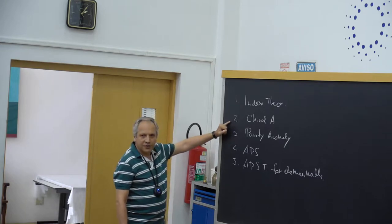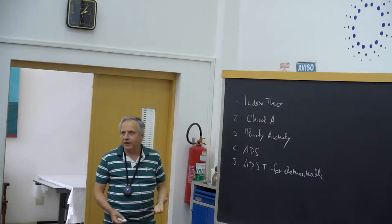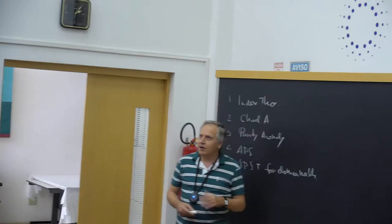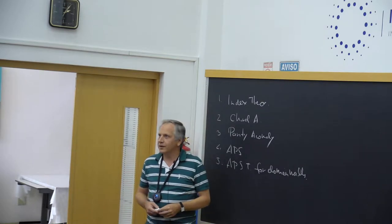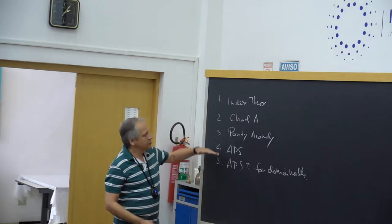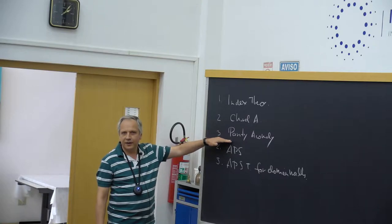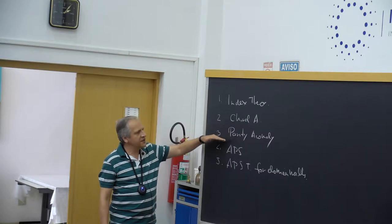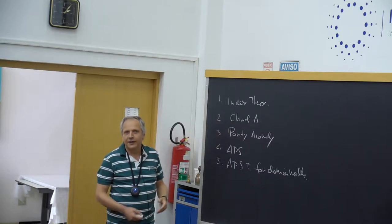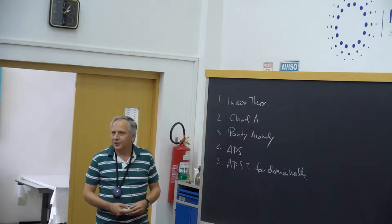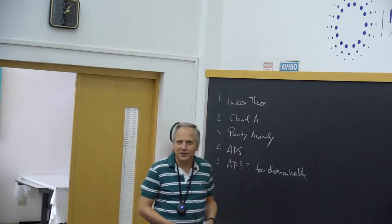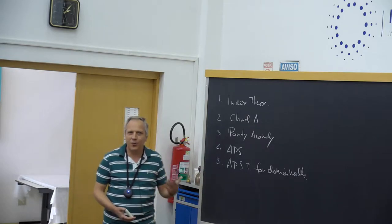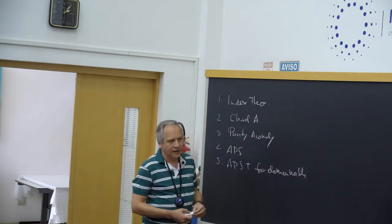About anomalies: an anomaly is a classical symmetry which is not there in the quantum theory. The classical theory has a certain symmetry like chiral symmetry, but in quantum theory this symmetry is lost. Similarly, the classical theory has something like a parity symmetry, but in quantum theory it is lost. So these are symmetries which are absent in the quantum regime.